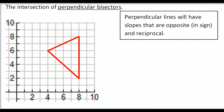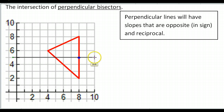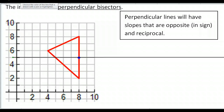The easiest perpendicular bisector to draw is going to be the one that goes with this vertical line. The midpoint of the vertical side here — one, two, three, four, five, six. This side is six tall, so the midpoint is going to be right here. If I draw a perpendicular line here, that'll be a bisector, and if it's perpendicular, it'll be a perpendicular bisector. A perpendicular line to a vertical line will just be horizontal. All I need to do is draw a horizontal line right here — that is my first perpendicular bisector. I'll put a little box here to remind me it's perpendicular and it's a bisector.